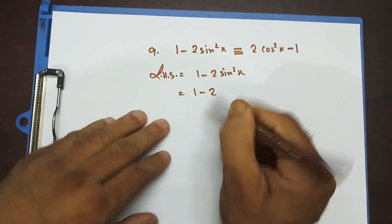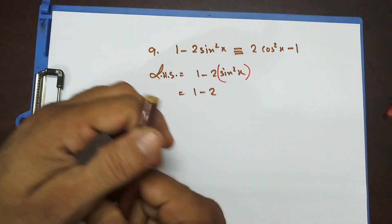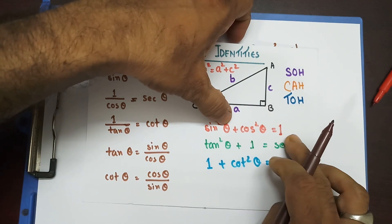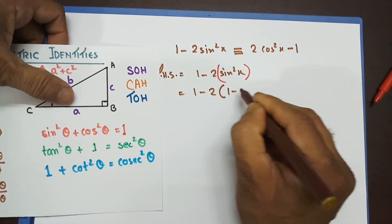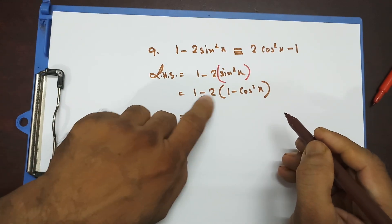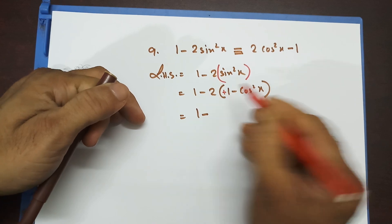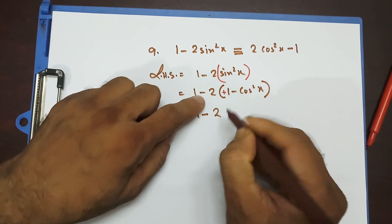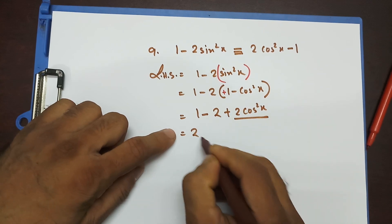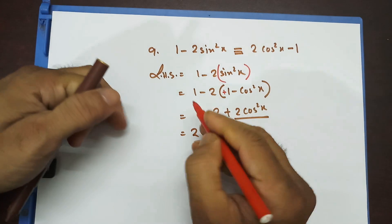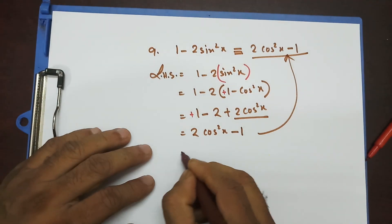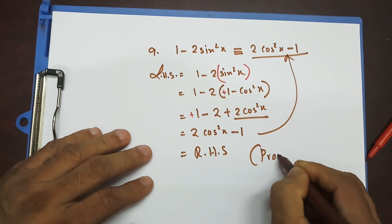So I write 1 minus 2 times (1 minus cos squared x). Expanding the bracket: minus times plus gives minus 2, and minus times minus gives plus 2 cos squared x. Rearranging, I get 2 cos squared x plus 1 minus 2, which equals 2 cos squared x minus 1. Looking closely, this matches the right-hand side, so LHS equals RHS — proved.